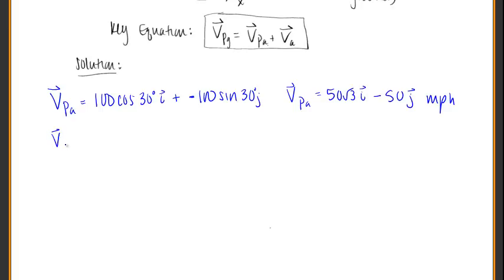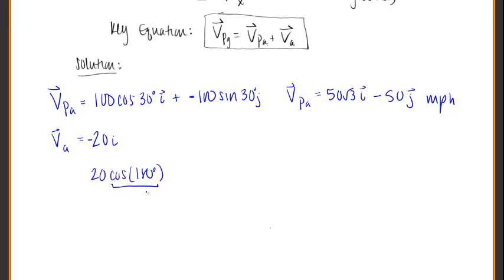Let's do the same thing with the air. The velocity of the air is going 20 miles per hour due west. Since west is negative on the x-axis, we get negative 20i. There's no angle because if it's due west we're at 0 degrees — or think of it as cosine of 180 degrees equals negative 1, which also makes it negative. For the y component, the sine of 180 is 0, so there is no y component.